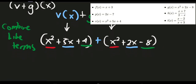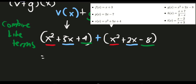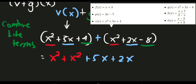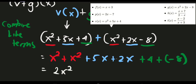Let's add those values. Rewriting the expression: x squared plus x squared, plus 5x plus 2x, and plus 4 plus negative 8. Simplifying: x squared plus x squared equals 2x squared; 5x plus 2x equals 7x; and 4 plus negative 8 equals negative 4. So the final answer for adding functions v and g is 2x squared plus 7x minus 4.